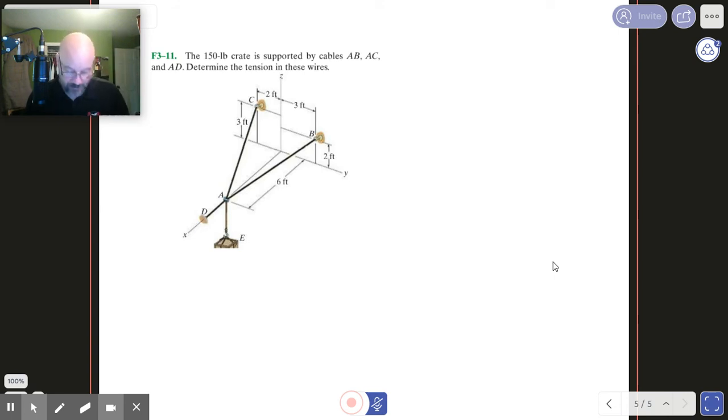So we've got a crate, and so we know that this cable right here is going to have that 150 pounds. All right, what we've got to do is we've got to find the others, okay? And so let me sort of show you how I would get started on this, because you're going to have to use position vectors to get your unit vectors.